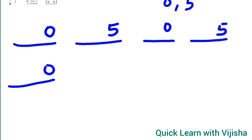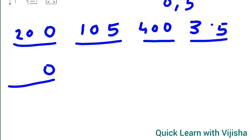You can use 0 for all numbers or 5 for all, but we will use both to understand the concept more clearly. For the tens and hundreds place, we can write any number. I will write: 200, 310, 400, 385, 375, and 440. Don't forget the number should be only 3 digits.